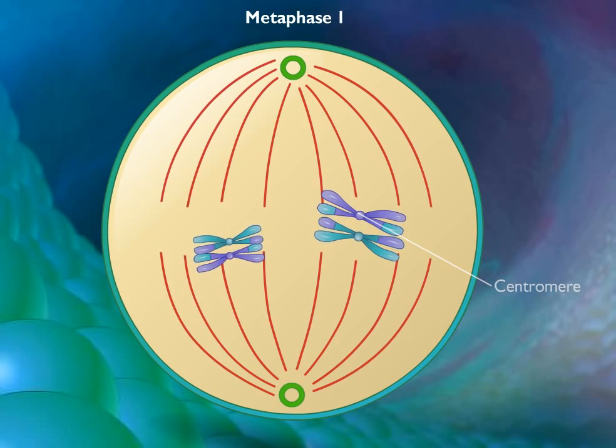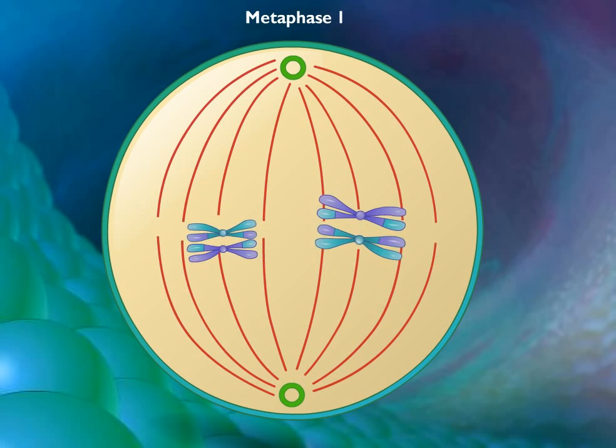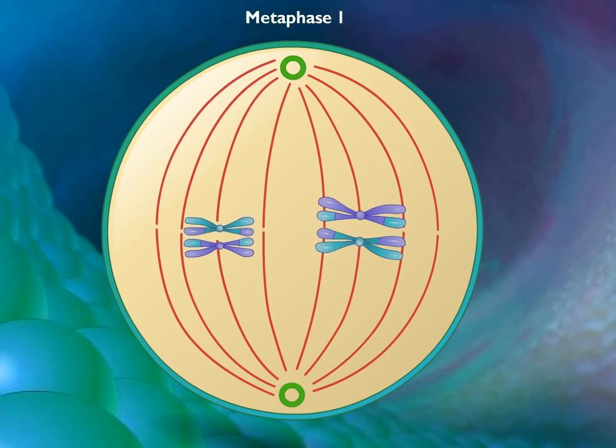Each pair of homologues then lines up on the metaphase plate. Either the maternal or paternal homologue may orient toward a given pole.